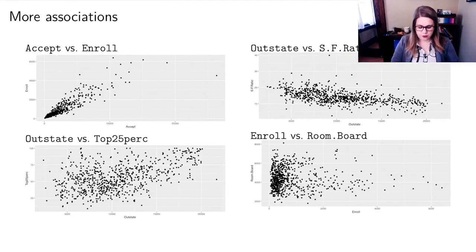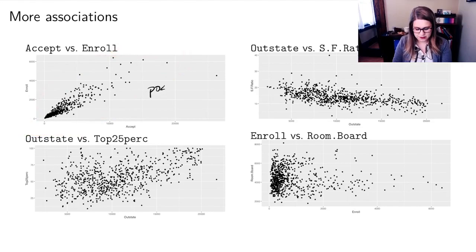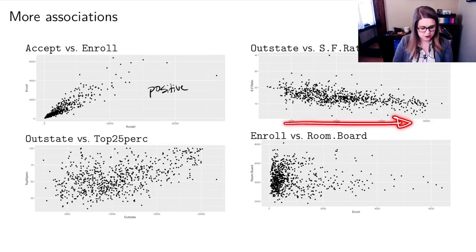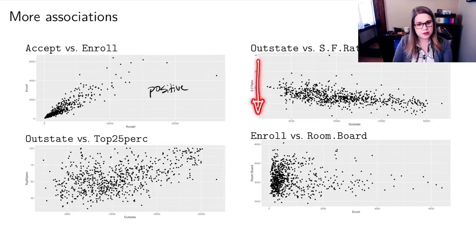We could look at the other ones I encouraged you to think about. Apps versus enroll also looks positive to me. If I look at the out-of-state tuition versus the student faculty ratio, it looks like a negative association. As the out-of-state tuition increases, the student faculty ratio decreases, meaning there are fewer students in classes. That makes sense to me.